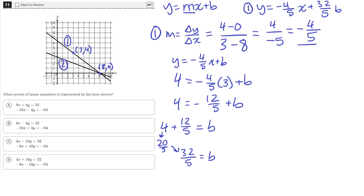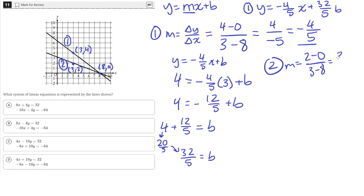Now let's do the same thing for line 2. We'll solve for the slope using rise over run and choose two points. One point is at (3, 2) and we'll use the same second point at (8, 0). The change in y is 2 minus 0, and the change in x is 3 minus 8, which gives 2 over negative 5. So the slope is negative 2 fifths.